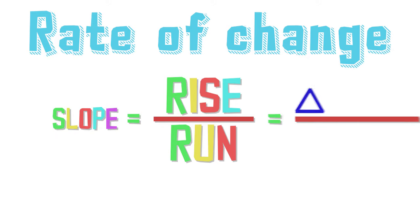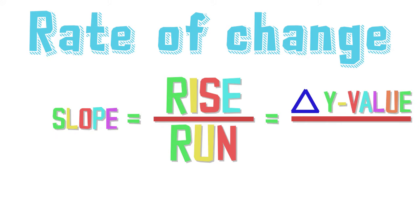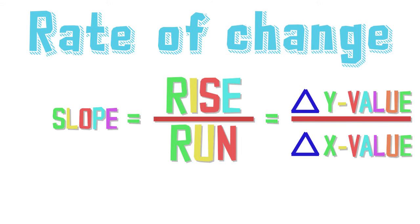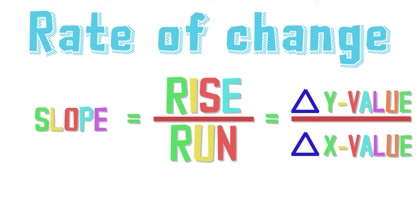Basically, the change in the y value — the rise — which only moves vertically, over the change in x value — the run — which only moves horizontally, written as a fraction. This fraction will result in what we call our rate of change, or slope.